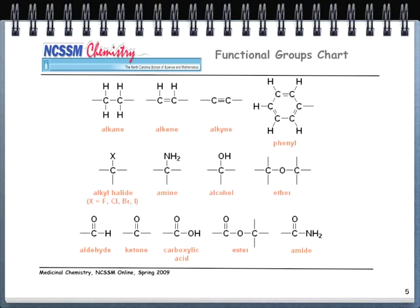Here's a chart of all the functional groups you must know for this course — the ones you absolutely have to have memorized and be able to recognize instantly. Alkanes, alkenes, and alkynes you've already seen. On the top right, you see what looks like a benzene ring, but if I take one hydrogen off, then we have a functional group called a phenyl group. Sometimes we call it a benzyl group, but most of the time it's called a phenyl group. You're going to see a lot of phenyl groups in medicinal chemistry.